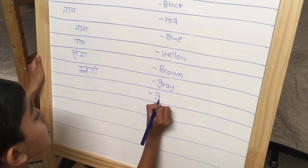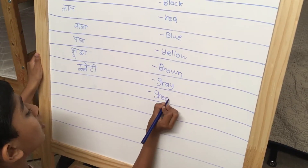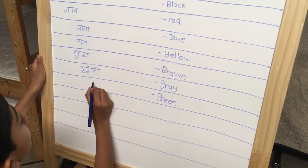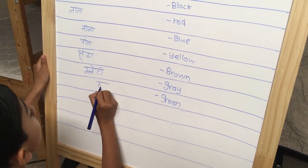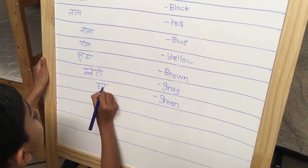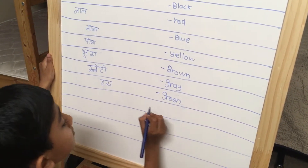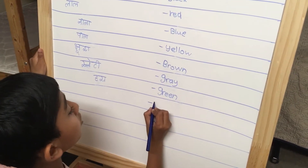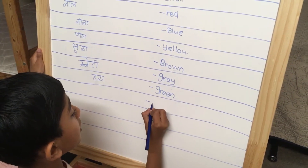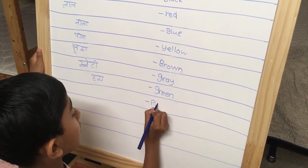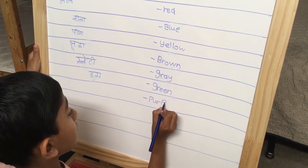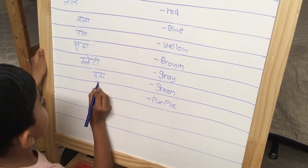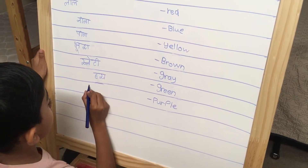Green is called Hara. Purple is called Baingani.